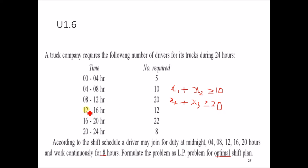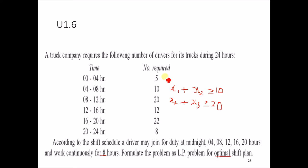For 12 to 16, we write x3 plus x4 greater than or equal to 12. For 16 to 20, x4 plus x5 greater than or equal to 22. For 20 to 24, x5 plus x6 greater than or equal to 8. We can also write x6 plus x1 greater than or equal to 5.